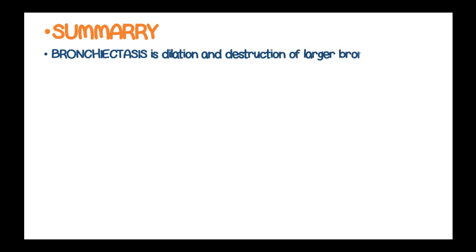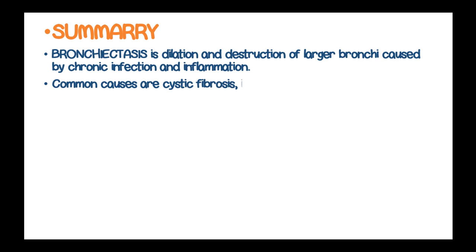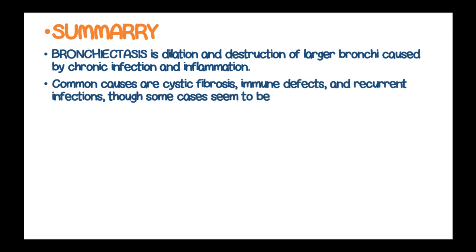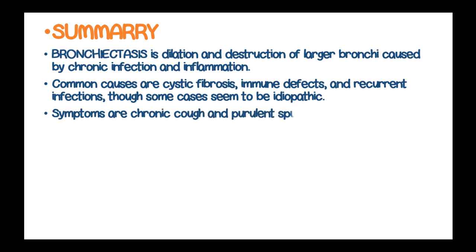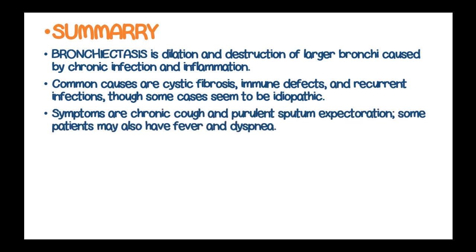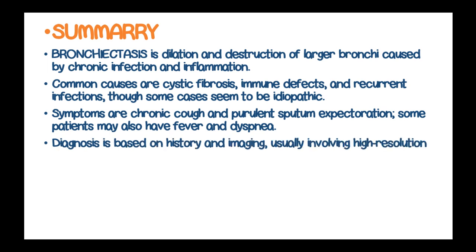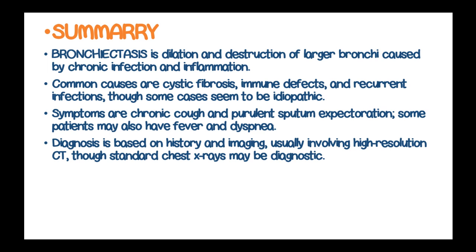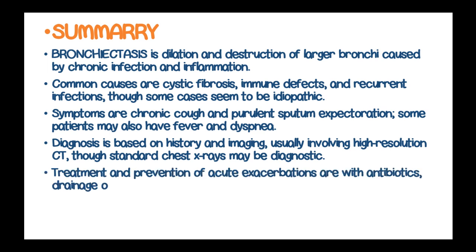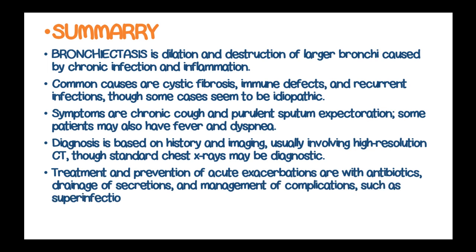In summary, bronchiectasis is dilation and destruction of larger bronchi caused by chronic infection and inflammation. Common causes are cystic fibrosis, immune defects, and recurrent infections, though some cases appear idiopathic. Symptoms are chronic cough and purulent sputum expectoration; some patients may also have fever and dyspnea. Diagnosis is based on history and imaging — usually high-resolution CT scan, though a standard chest X-ray can be diagnostic. Treatment involves prevention of acute exacerbations with antibiotics, drainage of secretions, and management of complications such as superinfection and hemoptysis.